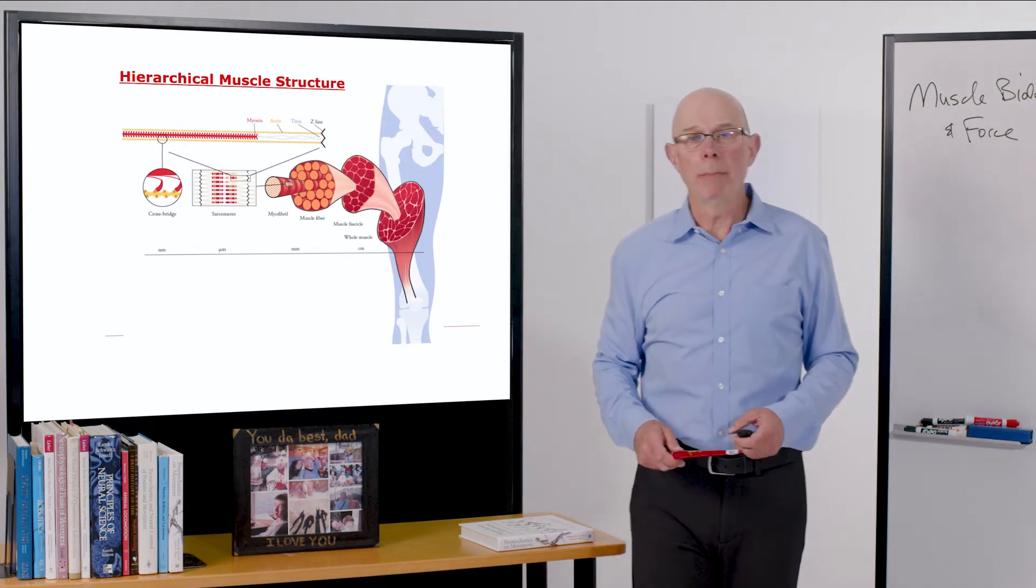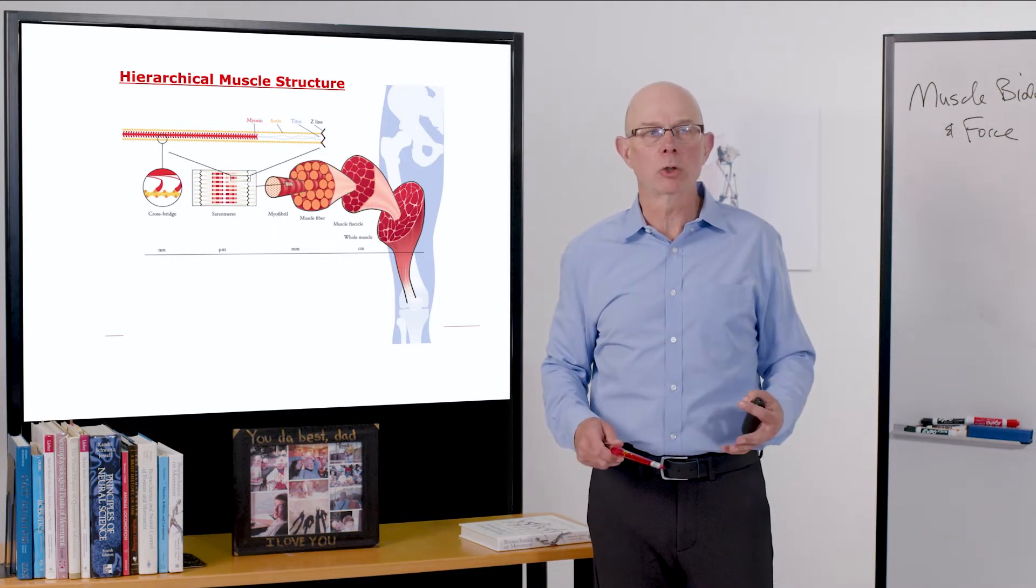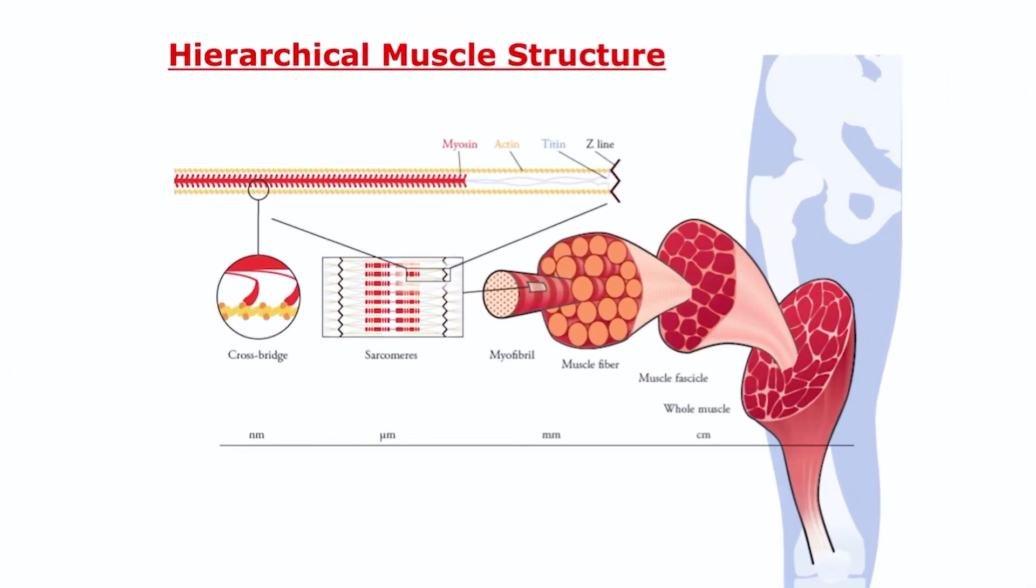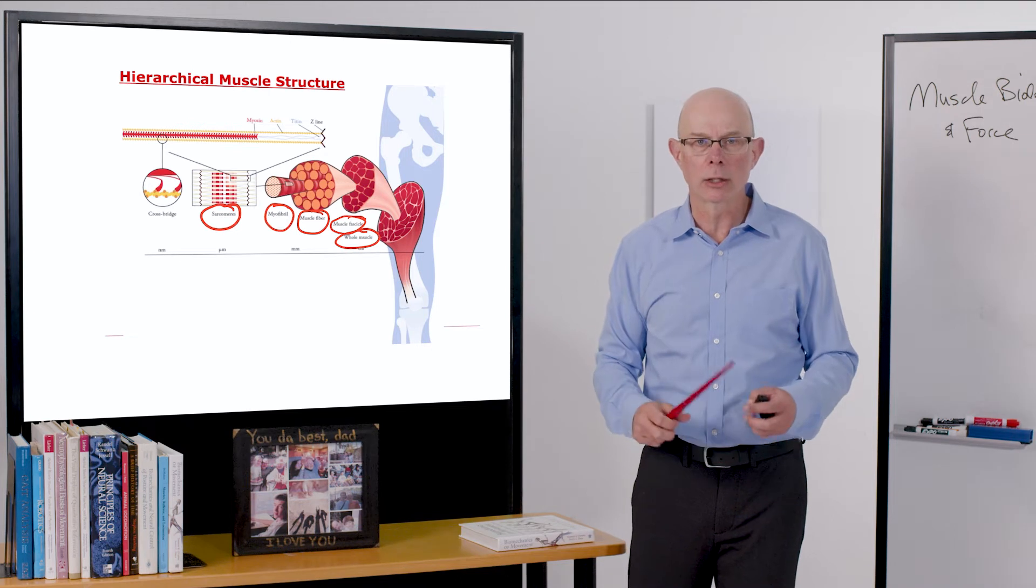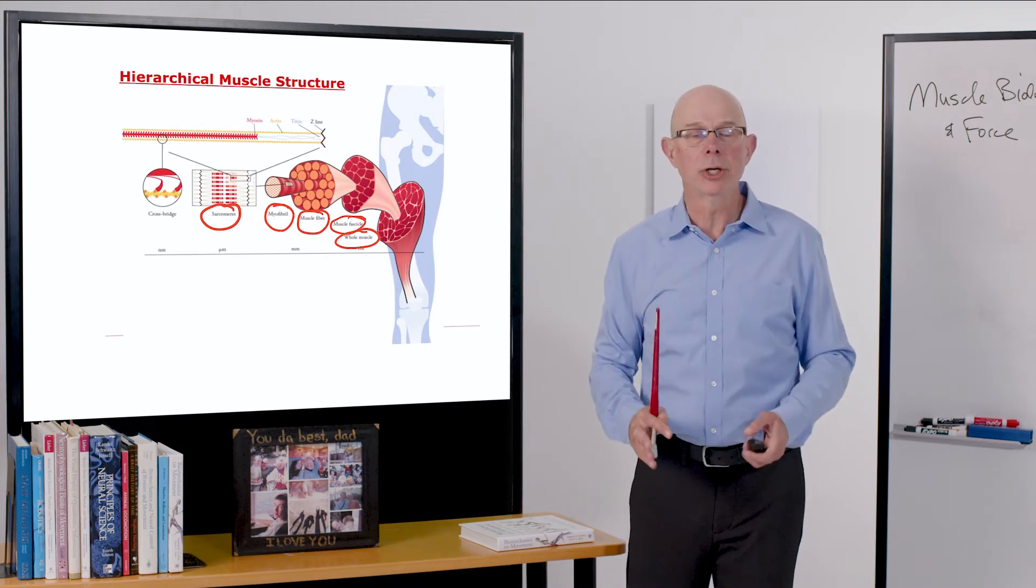I mentioned at the outset that muscles have this hierarchical structure, that these molecular structures are grouped into structures called sarcomeres. Those sarcomeres are bundled into myofibrils. Those myofibrils are bundled into muscle fibers. And those fibers are packed into fascicles and whole muscles. So muscle has this hierarchical structure. And what I want to do is take a look at each stage in this hierarchy.